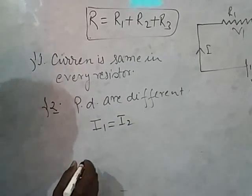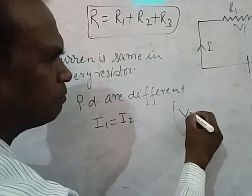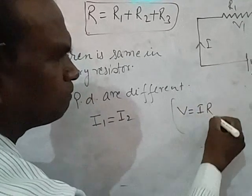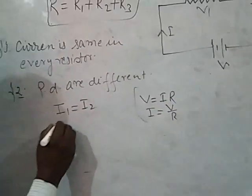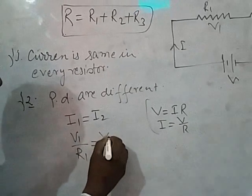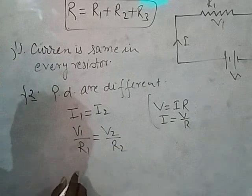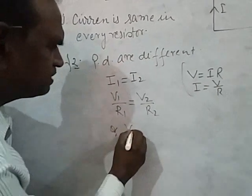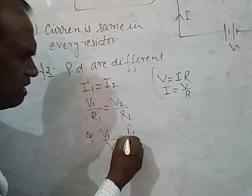By Ohm's law, V equals IR. V equals IR. I equals V by R. So V1 by R1 equals V2 by R2. And V1 by V2 equals R1 by R2.